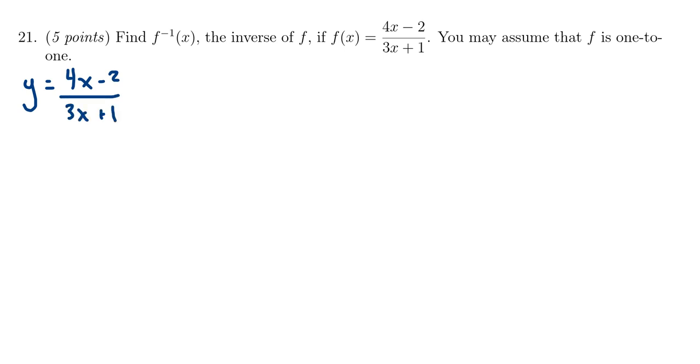So this gives us y. This is the equation that produces the graph of f. To get f inverse, we swap the x and y around. So we get x equals 4y minus 2 over 3y plus 1.